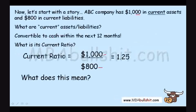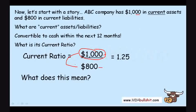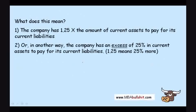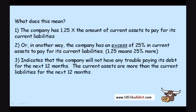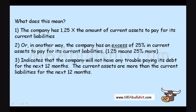As you can see, these current assets can be used to pay for the current liabilities, and they have an excess of 25%. This indicates that the company will not have any trouble paying its debt for the next 12 months, because the current assets are more than the current liabilities.